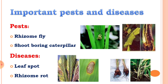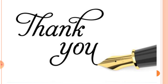The diseases are leaf spot and rhizome rot. These are the whole pest and diseases of turmeric crop. These are the complete cultivation practices of turmeric crop. Thank you.